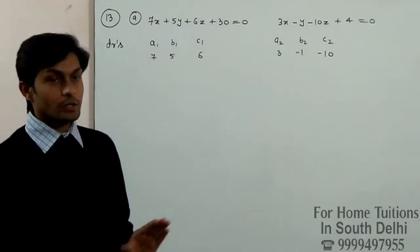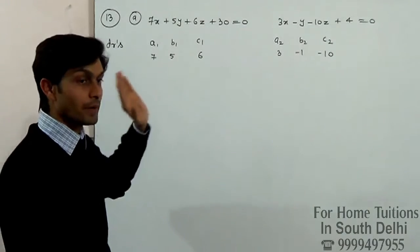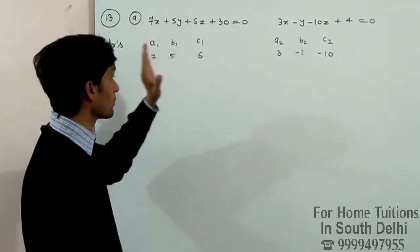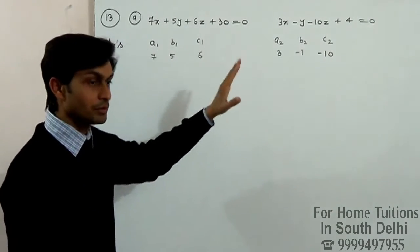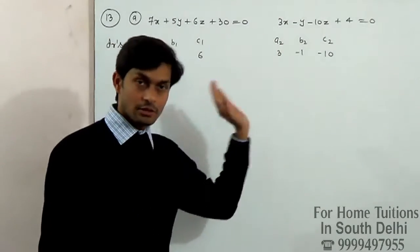So if parallel, the proportions are parallel. If A1 upon A2 is equal to B1 upon B2 is equal to C1 upon C2. If any of these things - all the ratios should be the same.